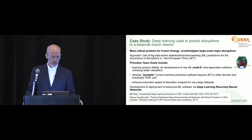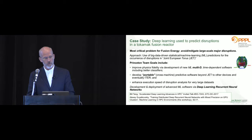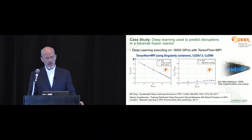The computational science task is developing and deploying machine learning software via deep learning recurrent neural networks. They have been active in this field over the last two years, scaling on many large GPU-accelerated supercomputers around the world—in the U.S., Switzerland, and Japan—and are getting going on Summit. These are scaling data for TensorFlow plus MPI using Singularity containers on Titan, scaling up to about 6,000 GPUs.